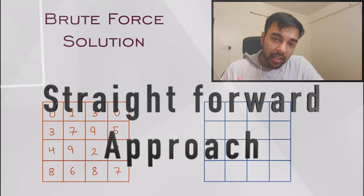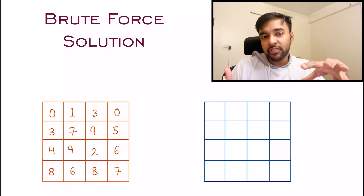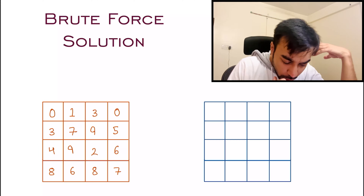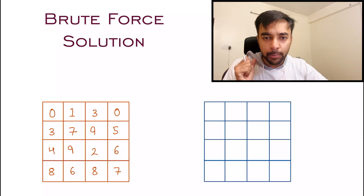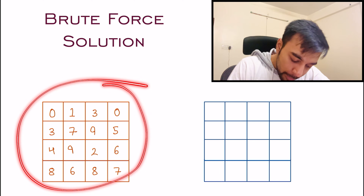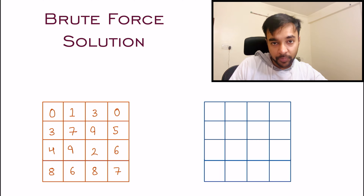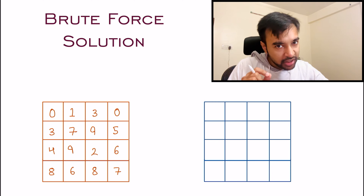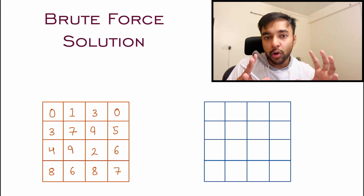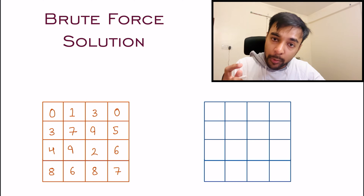A good developer will always try to come up with a brute force solution first, because then you can verify that a solution to the problem exists. So what is the most naive way to approach this? You could make an extra matrix to store all your temporary results, then traverse each element one by one.